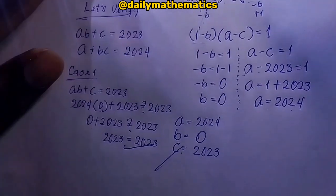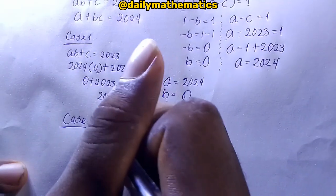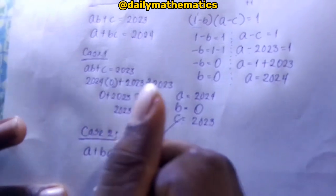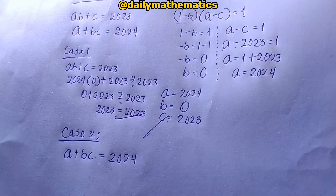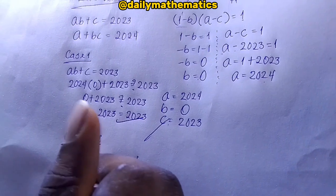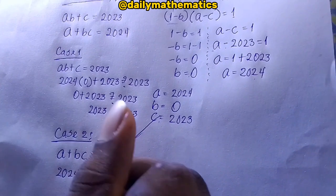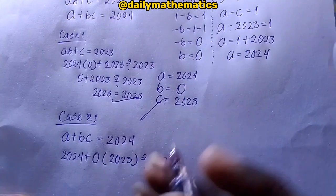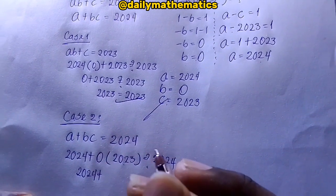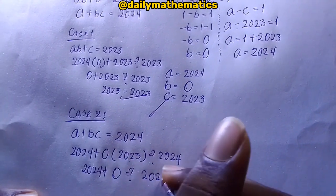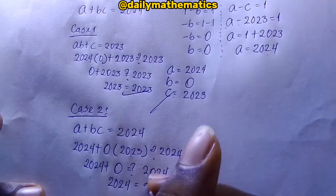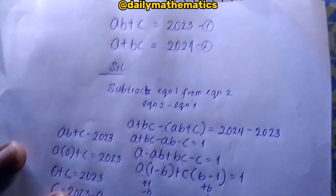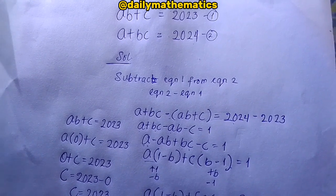For equation two, a plus bc equals 2024: substituting gives 2024 plus 0 times 2023 equals 2024 plus 0 equals 2024. That is also correct. This brings us to the end of this question. Please don't forget to like, subscribe, and leave your genuine thoughts about this video. Thank you very much.